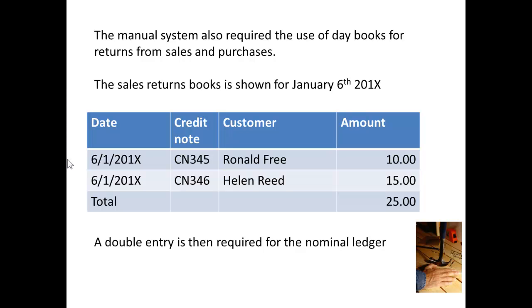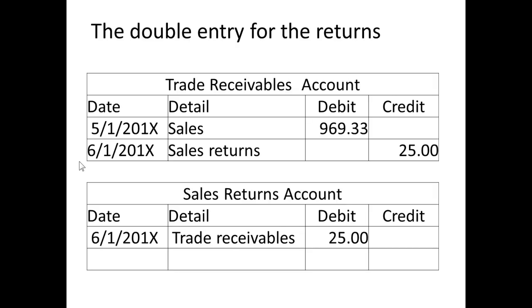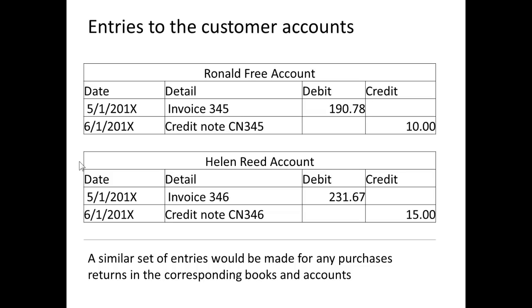Now, if you have a manual system of daybooks for sales and purchases, you also need another set for the returns — sales returns and purchases returns. Here we've got the sales returns book. Two entries for Ronald Free and Helen Reed, a total of £25 for that day. The double entry in the nominal ledger will be to credit trade receivables with £25 and debit sales returns with £25. The entries to the customer accounts are credits — credits to Ronald Free and credits to Helen Reed. So, you've got a similar set of entries for any purchases returns as well, in the corresponding set of books and accounts.